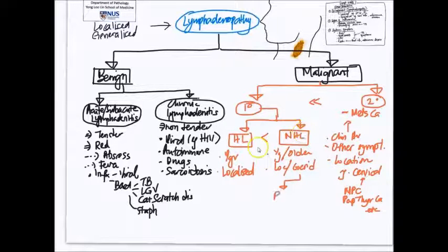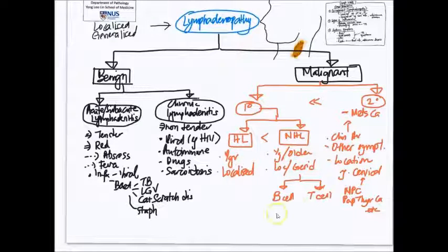Looking more specifically at non-Hodgkin lymphoma, we then further subdivide very simply into B cell lymphomas and T cell lymphoma. B cell lymphoma is much more common than T cell lymphoma, and then further down we can also use for example the WHO classification system.